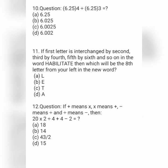Next question: if the first letter is interchanged by the 2nd, 3rd by 4th, 5th by 6th and so on in the word HABILITATE, which will be the 8th letter from the left in the new word? Option A is L, option B is E, option C is D, and option D is A.